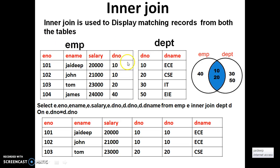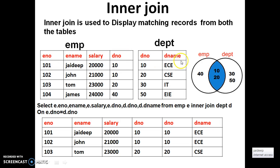For example, consider there are two tables: one is EMP and the other is DEPT. As I already told, the rules for joins are: minimum two tables must exist and a common column must exist between both the tables. The common column here is D number in both tables.